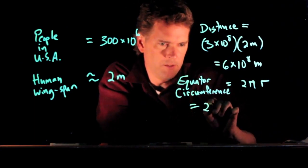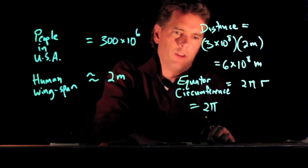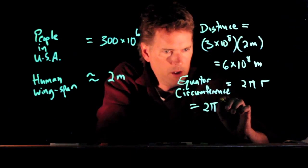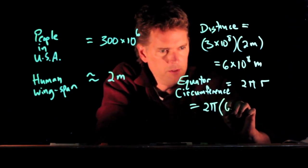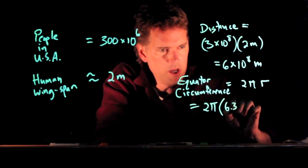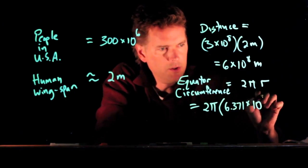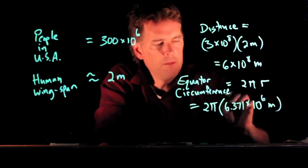What's the radius of the earth? It is 6,371 kilometers. And so we can put in a number here that is 6.371 times 10 to the six meters.